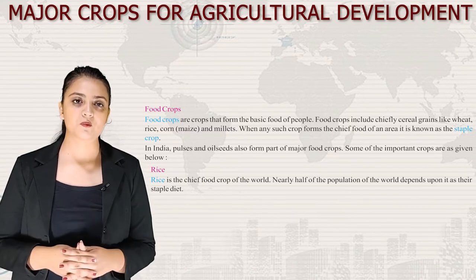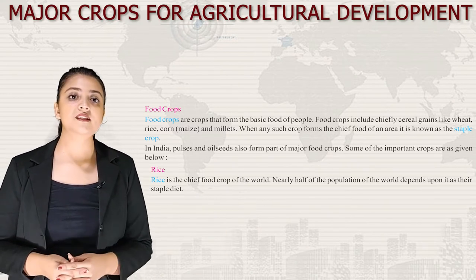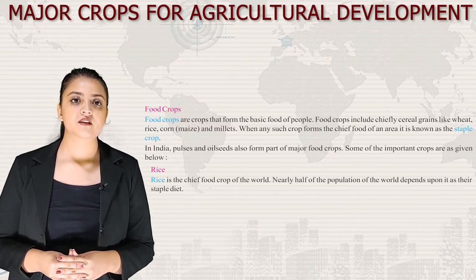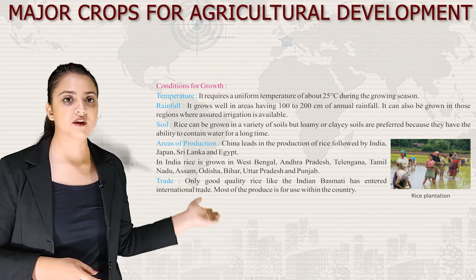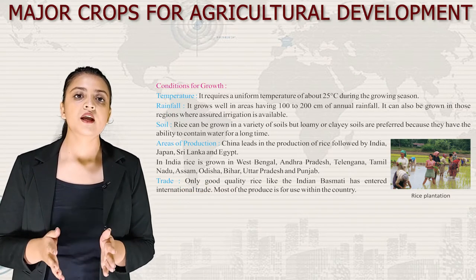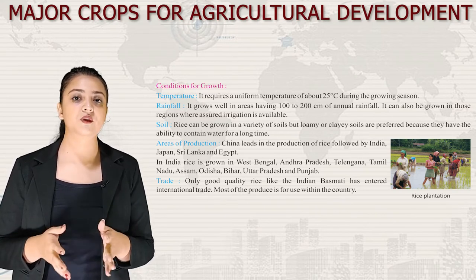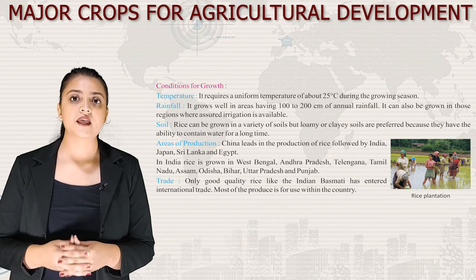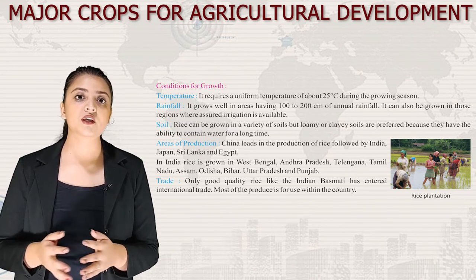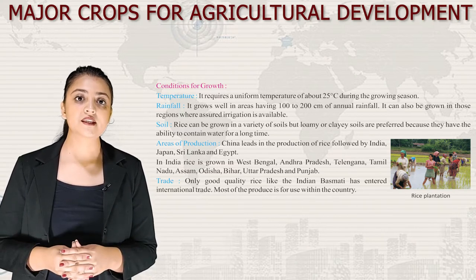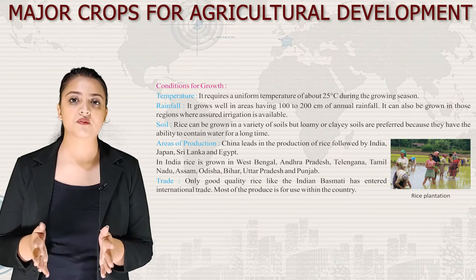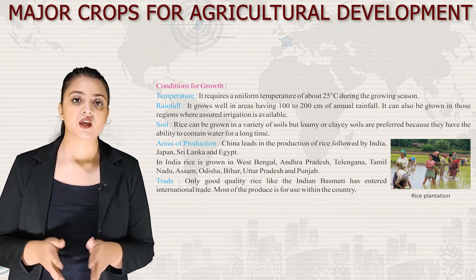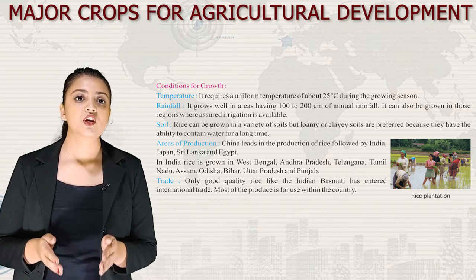First is rice — the chief food crop of the world. Nearly half of the world's population depends on it as their staple diet. Conditions for growth: it requires a uniform temperature of about 25°C during the growing season, 100 to 200 cm of annual rainfall, and can also be grown where assured irrigation is available. Rice can be grown in a variety of soils but loamy or clay soils are preferred as they retain water for a long time. China leads in production, followed by India, Japan, Sri Lanka and Egypt.